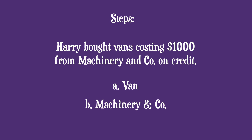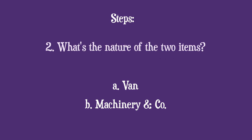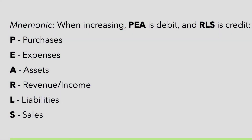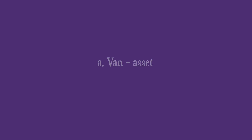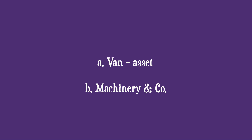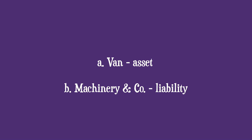The second step is to identify the nature of each item using the PEARLS mnemonic. The first item is the van — is it a purchase, expense, asset, revenue, liability, or sales? A van is an asset. The second item is Machinery & Co. We bought from them on credit and haven't paid yet — so Machinery & Co are our liability, because we owe them money.